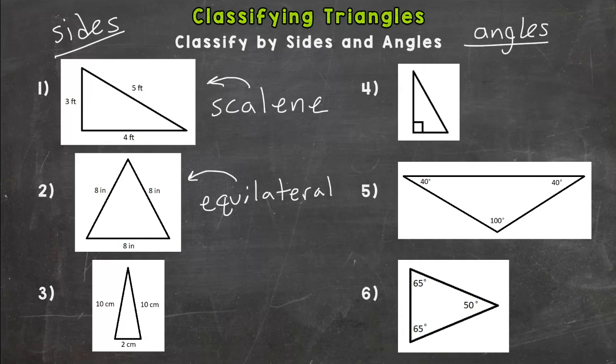And then number three, your last option here. We have ten centimeters, ten centimeters, and two centimeters. So two of the sides are congruent. If two of the sides are congruent, isosceles.